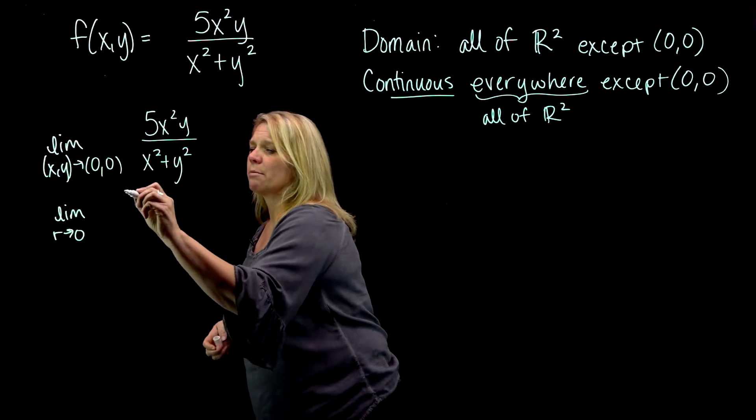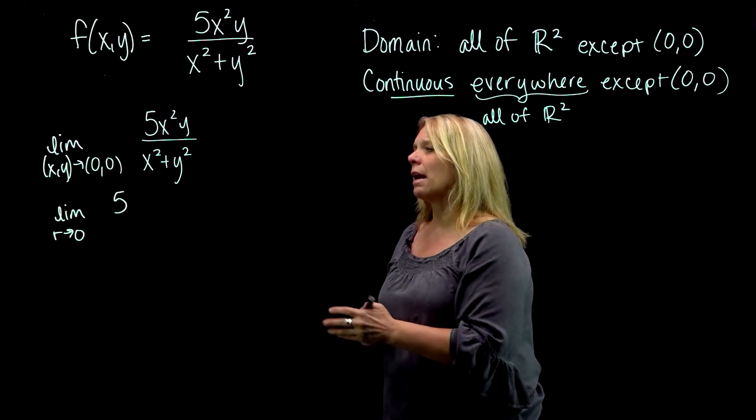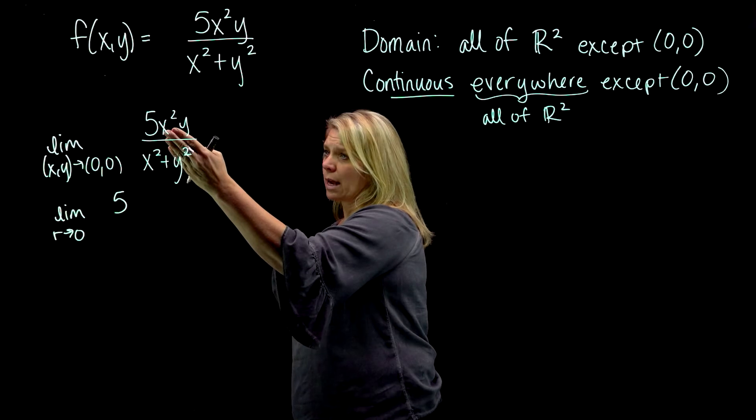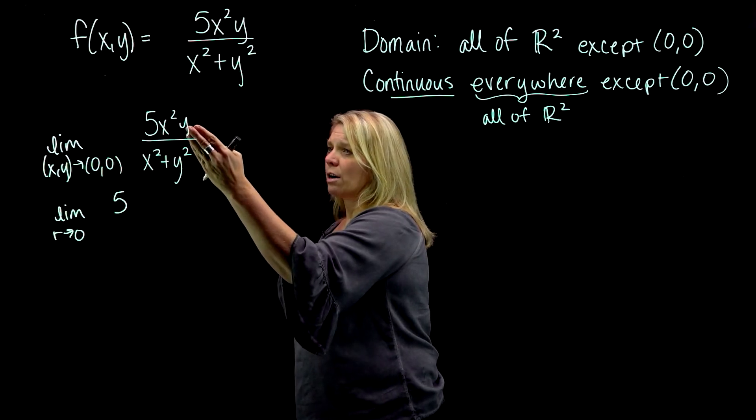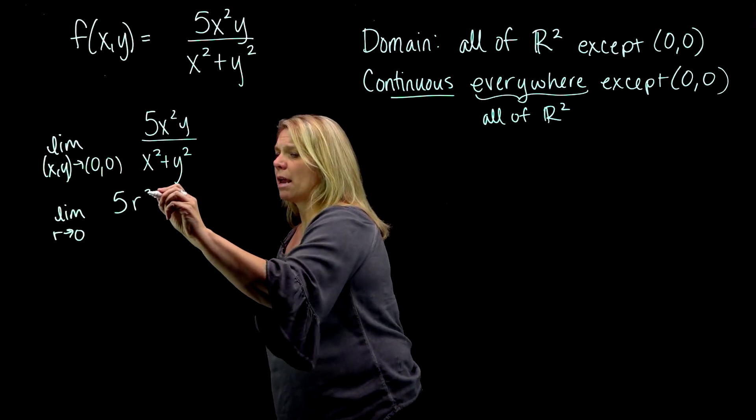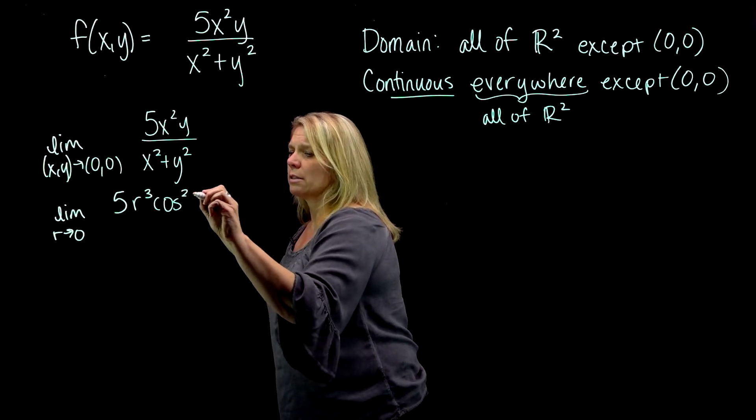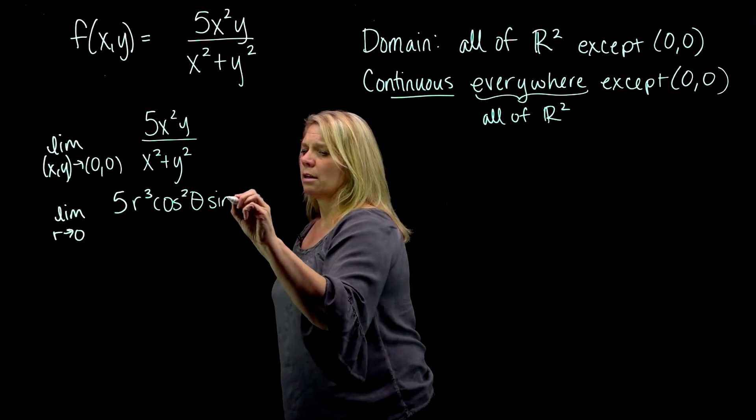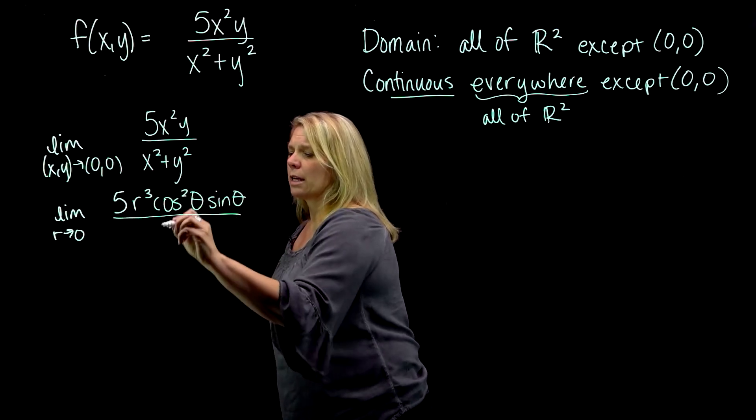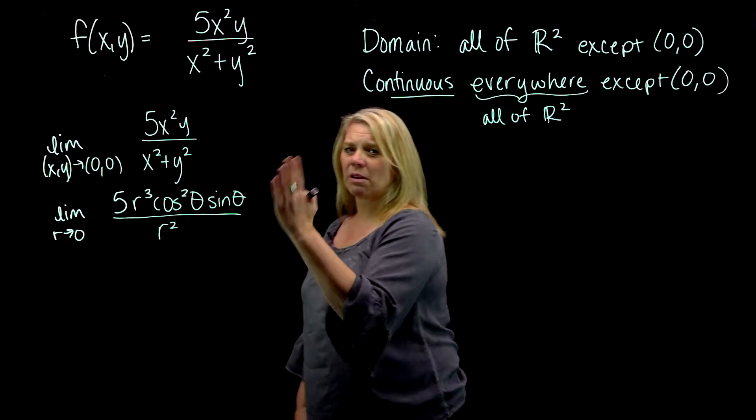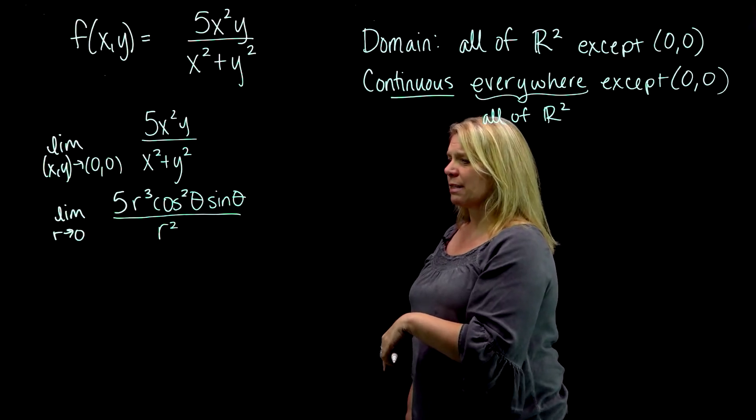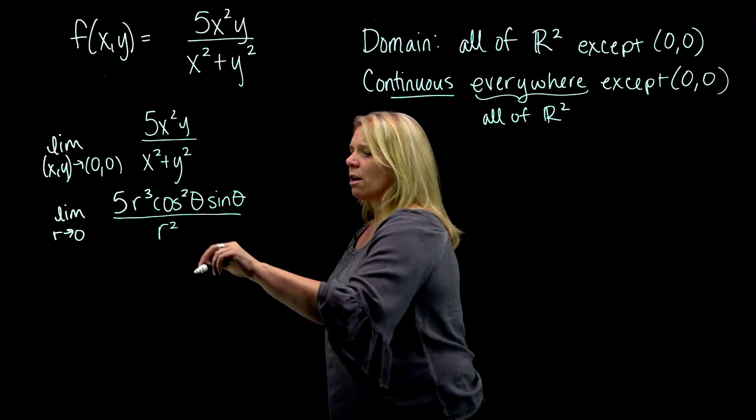We're going to make the substitution here. I'm going to go ahead and simplify as I do that. So x is r cosθ and y is r sinθ. So when I make that substitution, I'll get 5r³ cos²θ sinθ. And x² + y² is r². Again, we went through that in a little bit more detail in a previous video. Some of the r's cancel.